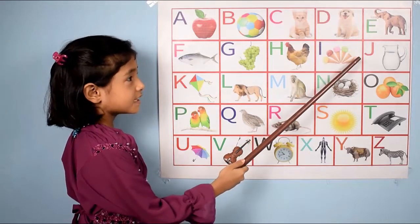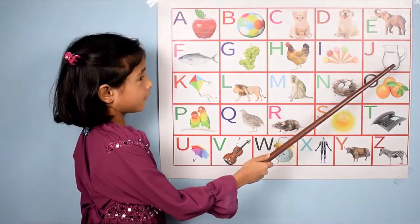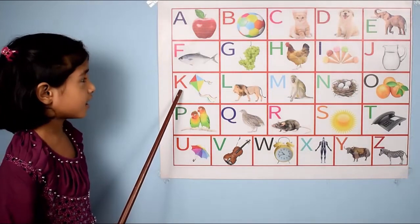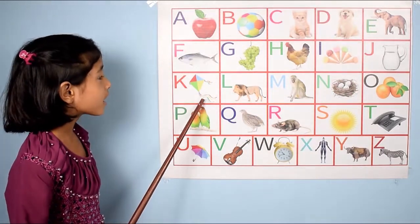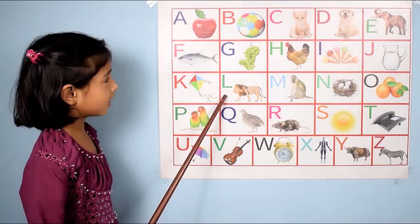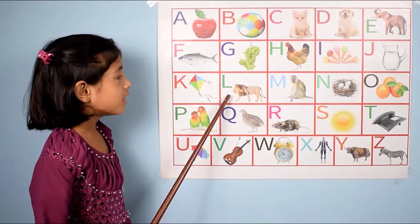J, J for Jar. K, K for Kite. L, L for Lion.